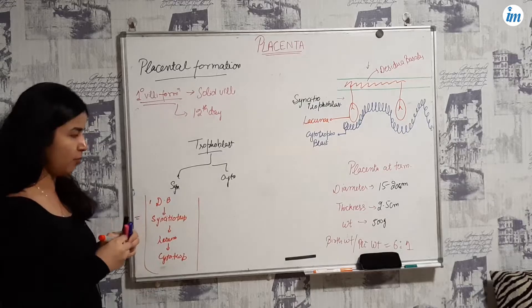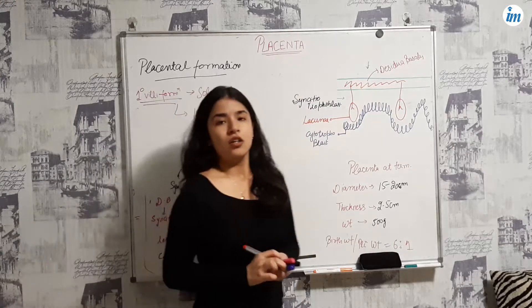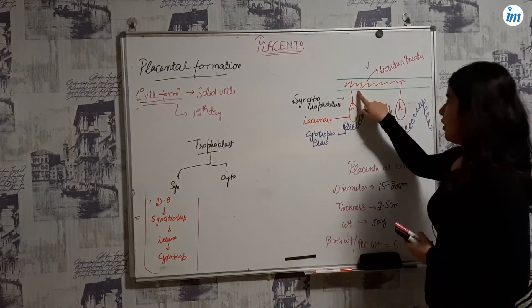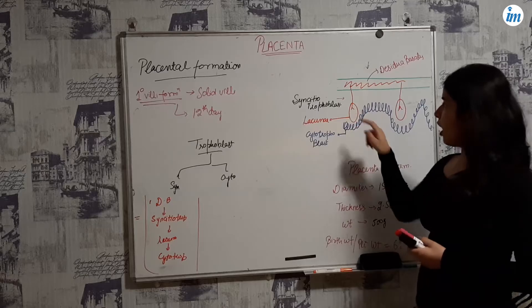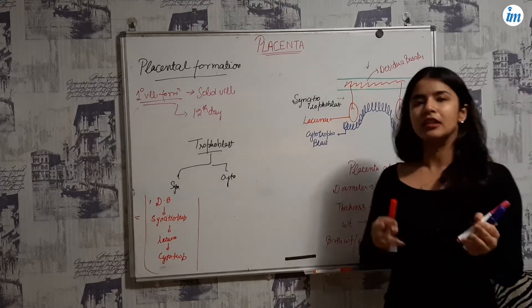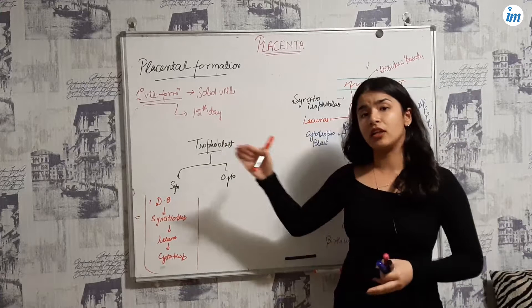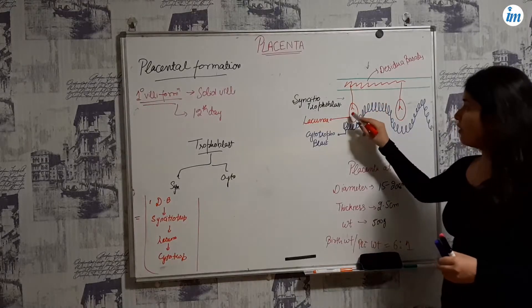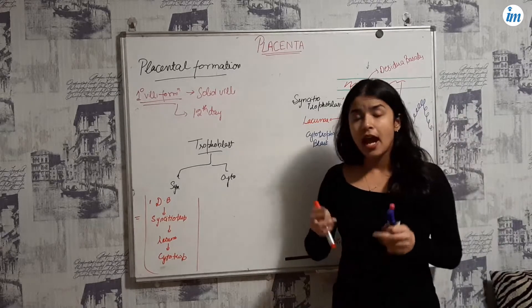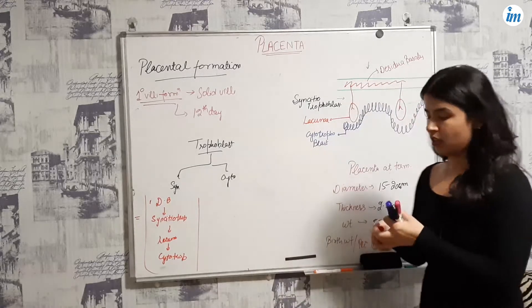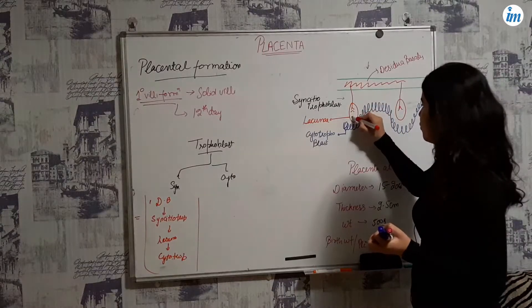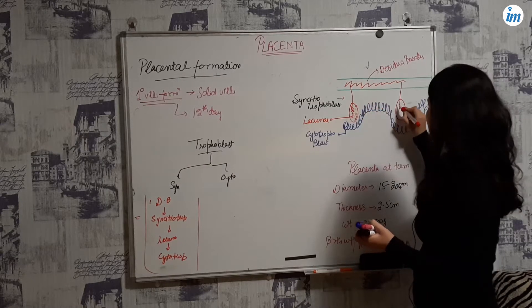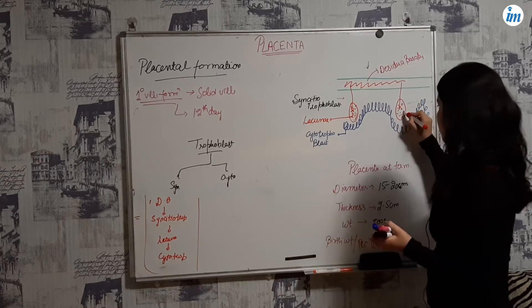The spiral arteries from the maternal side supply and fill the lacunae with blood. So there is maternal blood inside these lacunae.